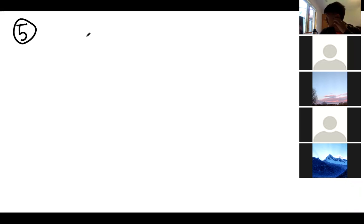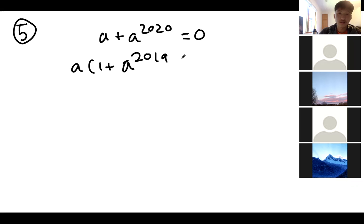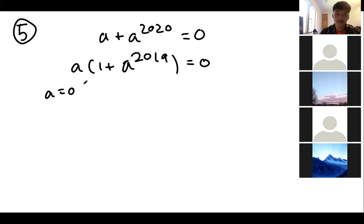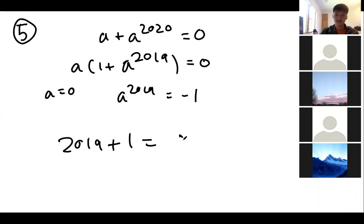Problem 5 asks for the number of complex numbers a such that a^20 + a = 0. First factor out a: a(1 + a^19) = 0. So a = 0 is one solution, and by the complex roots theorem, a^19 = −1 has 19 distinct roots. In total, there are 19 + 1 = 20 roots.